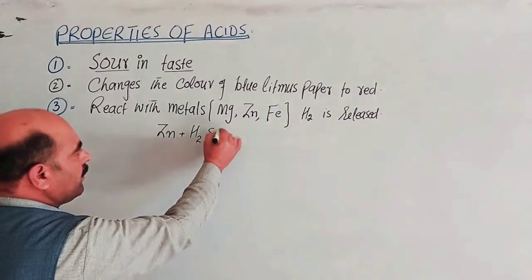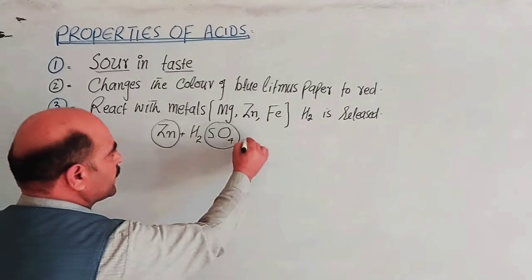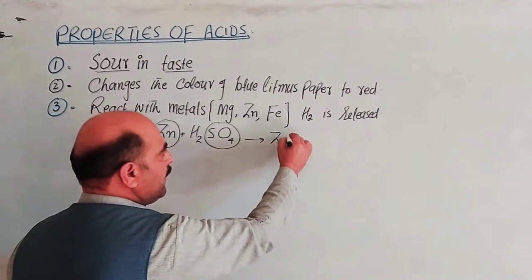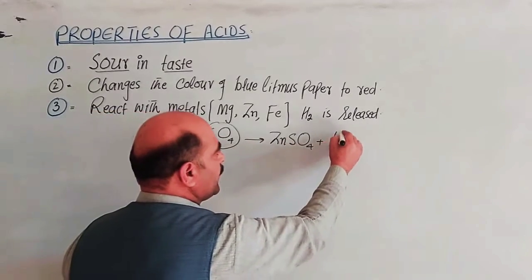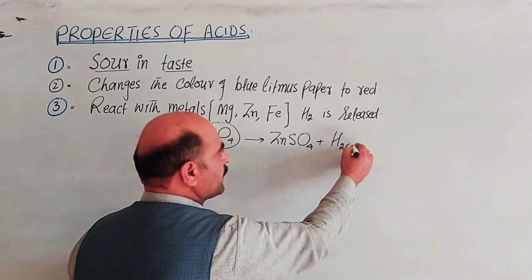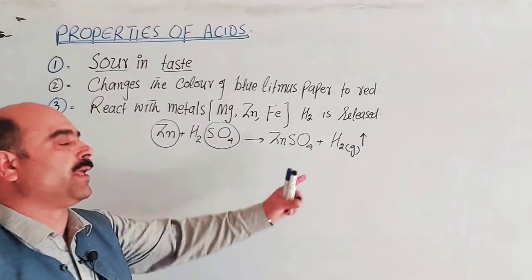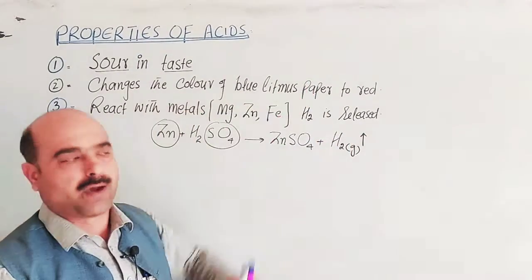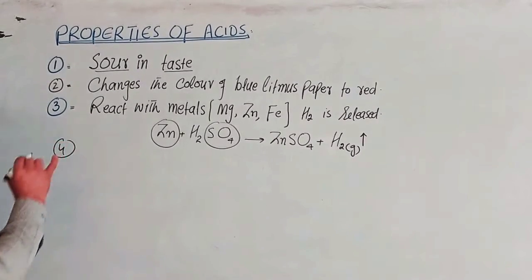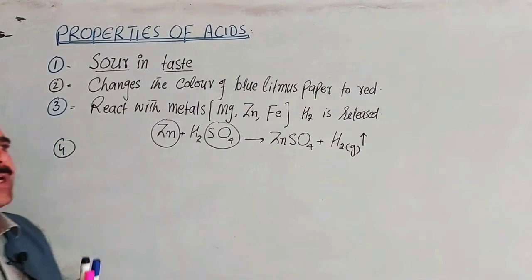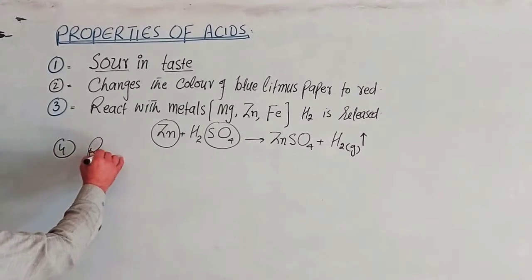For example, H₂SO₄ reacts with zinc to form zinc sulfate (ZnSO₄) and hydrogen gas is released. The upward arrow represents that the gas rises upward.